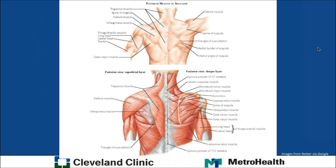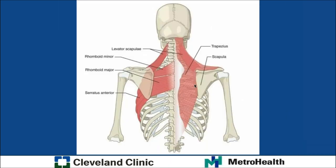We're going to talk mostly about the scapulothoracic stabilizers today. The trapezius is a superficial muscle with a very broad origin and insertion. The deep muscles include the levator scapulae, rhomboids, and the serratus anterior, which we'll talk about quite a bit.